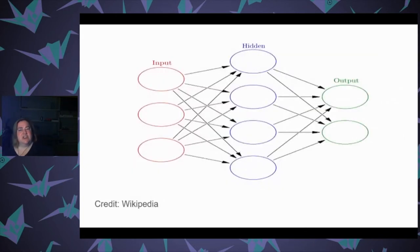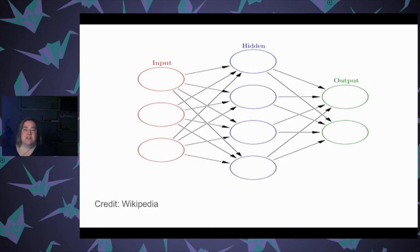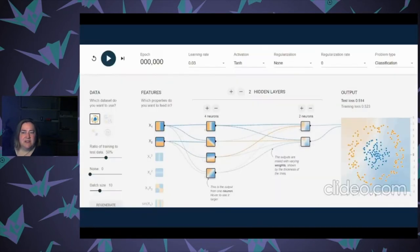Here is an image of what a neural network looks like. You've got your input layer. In this one, you have only one hidden layer, but with neural networks you can have more than one hidden layer as well. And then you have your output layer. We're going to look at TensorFlow to actually see what it's doing.